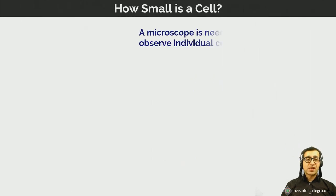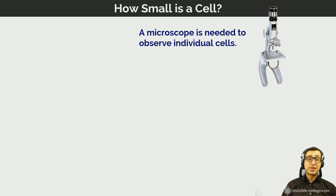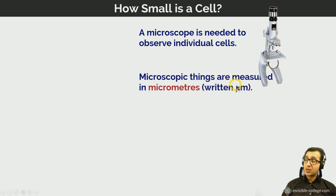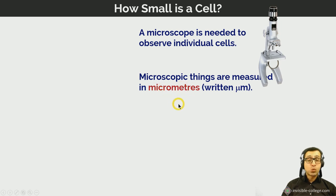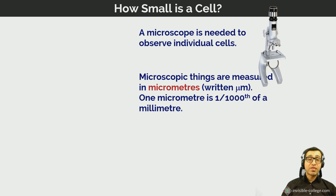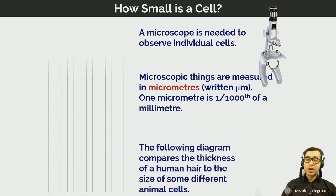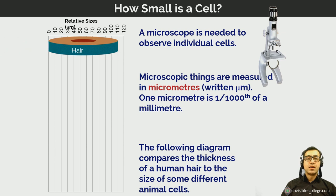How small is a cell? We need at least an optical microscope to measure them. Objects viewed under an optical or light microscope are typically measured in divisions of a meter called micrometers, written using the Greek symbol mu for micro. The prefix 'micro' in front of any unit means one millionth of that unit. Since there are a thousand millimeters in a meter, one micrometer is one thousandth of a millimeter.